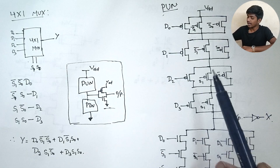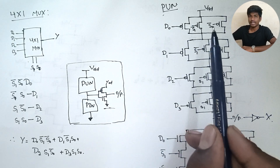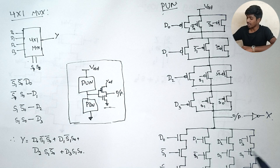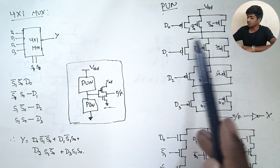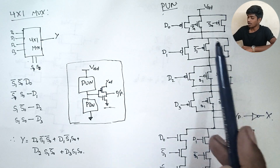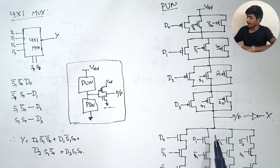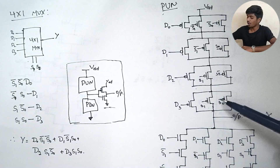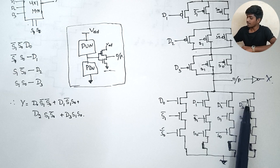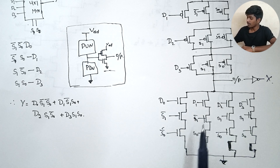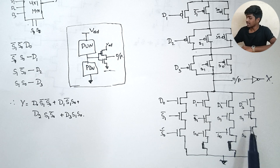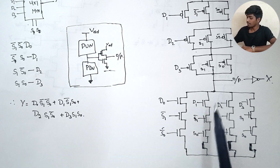For the pull-down network, D0, S1, S0 — three components are in parallel. Here it is reverse: parallel components are in series and series components are four in total. Sub-circuits D0 S1 bar S0 bar, D1 S1 bar S0, D2 S1 S0 bar, and D3 S1 S0 — these four groups are each in series, and the four groups themselves are in parallel.